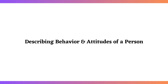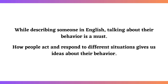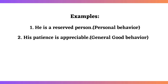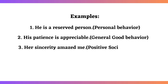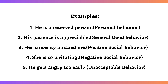Describing behavior and attitudes of a person: while describing someone in English, talking about their behavior is a must. How people act and respond to different situations gives us ideas about their behavior. Examples: He is a reserved person. His patience is appreciable. Her sincerity amazed me. She is so irritating. He gets angry too early.